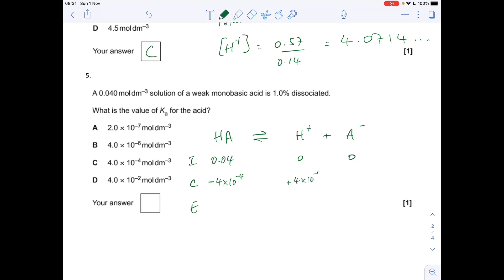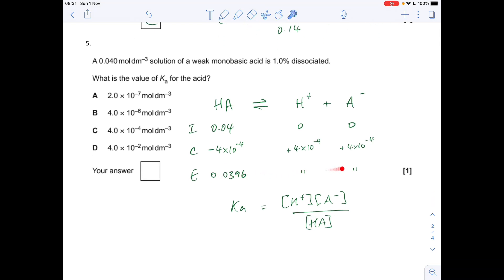That means at equilibrium the difference will be the moles that you've got, so 0.0396, and obviously they're going to be the same because they started at zero. We've got to work out the Ka for this acid, so that's the H+ concentration times the A- concentration all over the HA concentration at equilibrium. We're just going to feed these numbers into this and we get option B coming out as the right answer.